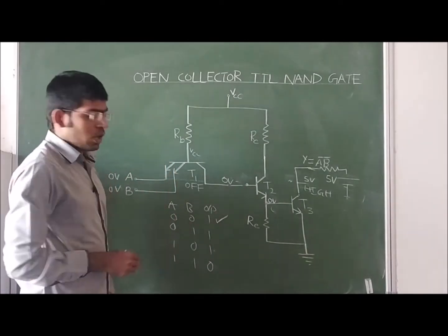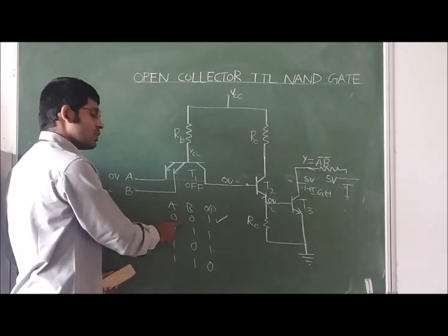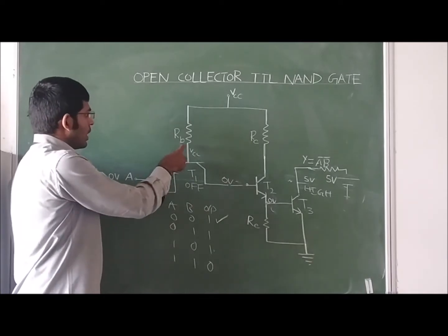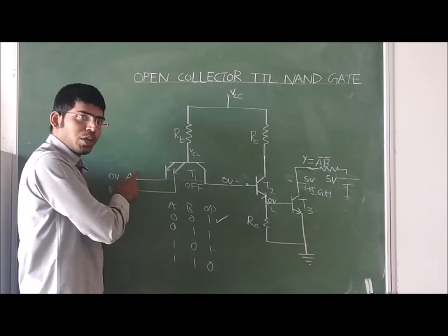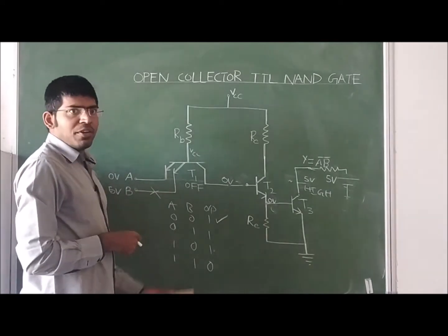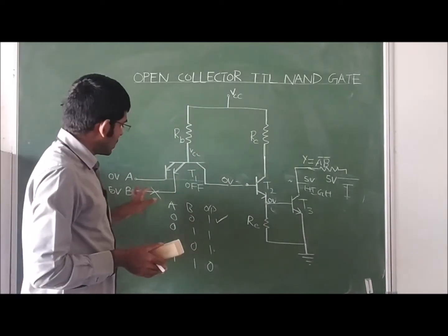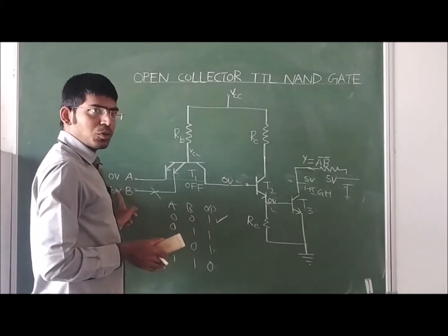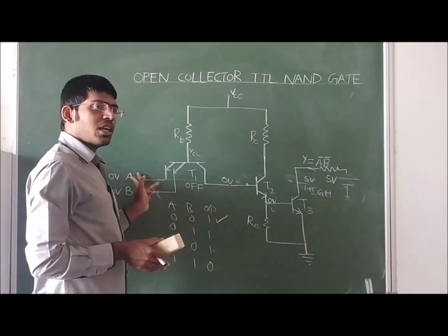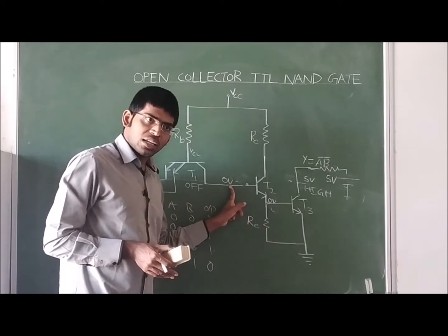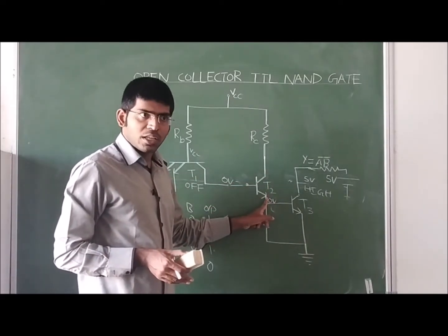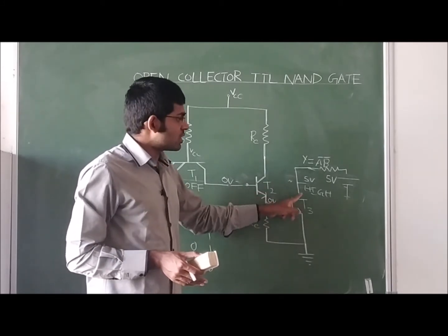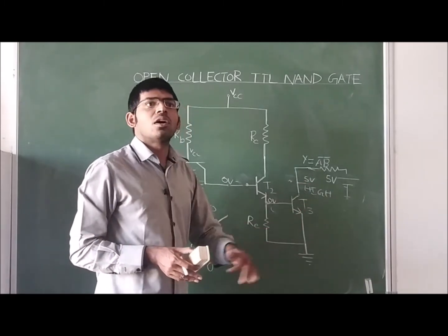Second case: input A is 0V, input B is changed to 5V. T1 is still in ON condition with respect to input A, so the collector voltage is again 0. The same 0V is supplied to T2's base, giving 0V at T2's emitter. Therefore T3 is again OFF and the output is high.